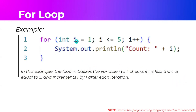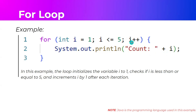For example: for (int i = 1; i <= 5; i++). Execution starts with initialization — int i = 1. Then we check the condition: is i less than or equal to 5? True, so we proceed to the statements and print 'count 1'. Then the afterthought increments i to 2. Is 2 less than 5? True — we continue. This repeats until the condition becomes false, at which point the iteration terminates.